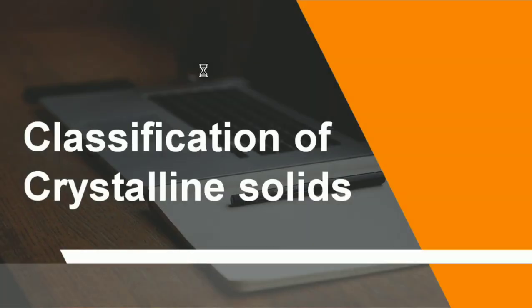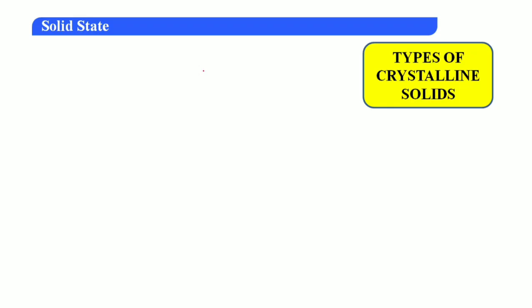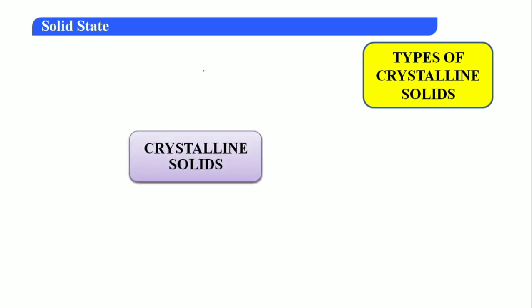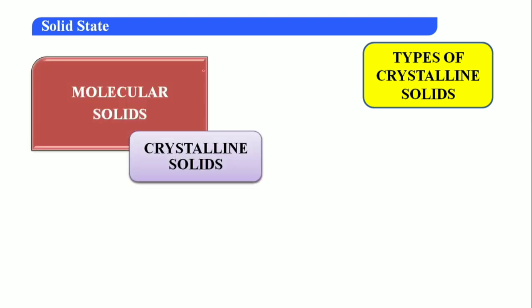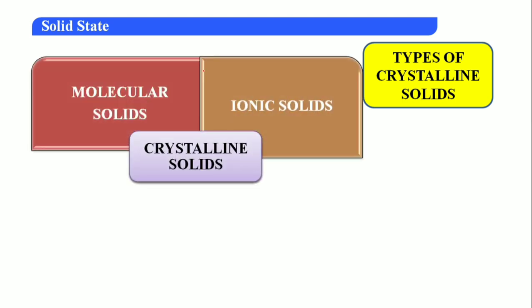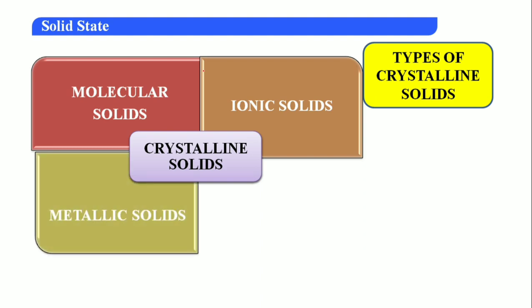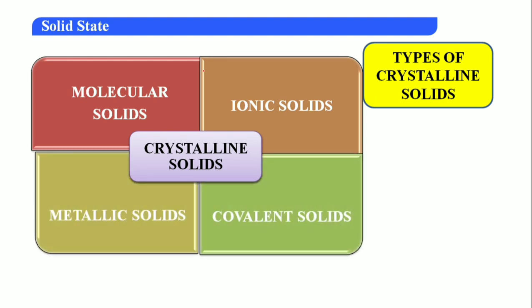Now, classification of crystalline solids. For our syllabus, we study crystalline solids in detail. Crystalline solids are divided into four types: molecular solids, ionic solids, metallic solids, and covalent solids.